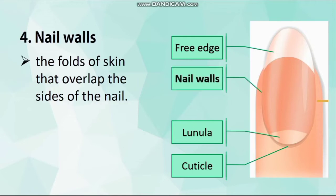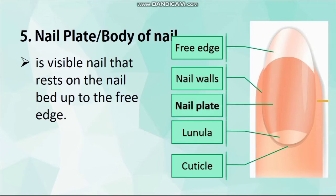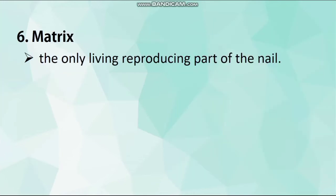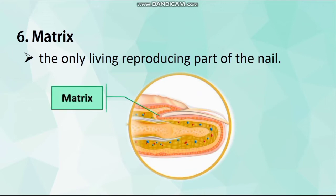Number 4: Nail walls. Nail walls are the folds of skin that overlap the sides of the nail. They hold your nail in place and protect the nail plate edges. Number 5: Nail plate or body of nail. It is the visible nail that rests on the nail bed up to the pre-edge. This is made up of dead cells and a minimum amount of moisture. The nail is semi-transparent, allowing the color of blood supply of the dermis to show. Number 6: Matrix. Matrix is the only living reproducing part of the nail, situated directly below the cuticle. New cells form here and continually push forward to produce the nail plate.